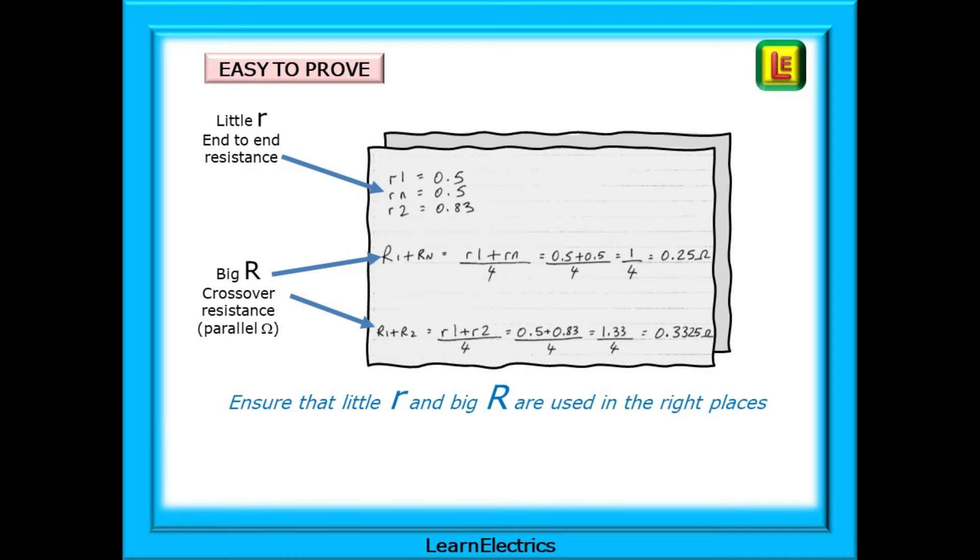And for big R1 plus big R2, we have little R1 plus little R2 divided by 4. This is 0.3325 here, which we can round down to 0.33 ohms. And we'll look at these in more detail soon. And do ensure that little R and big R are used in the right places.